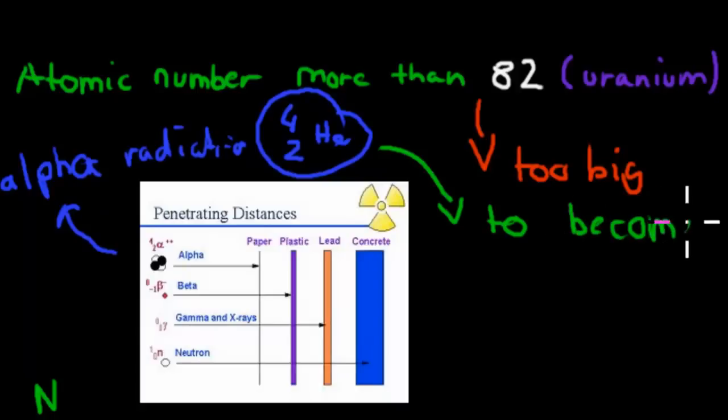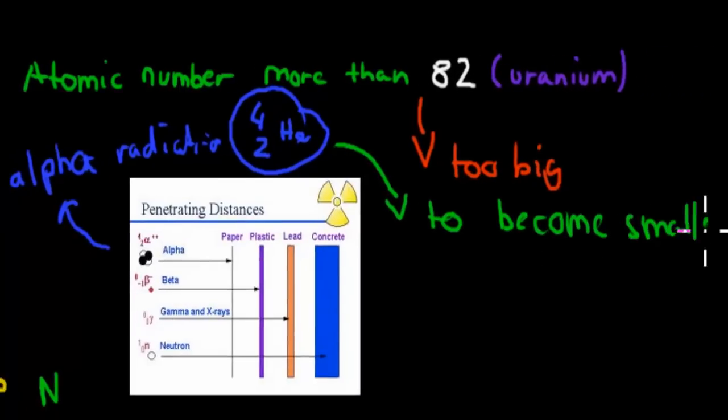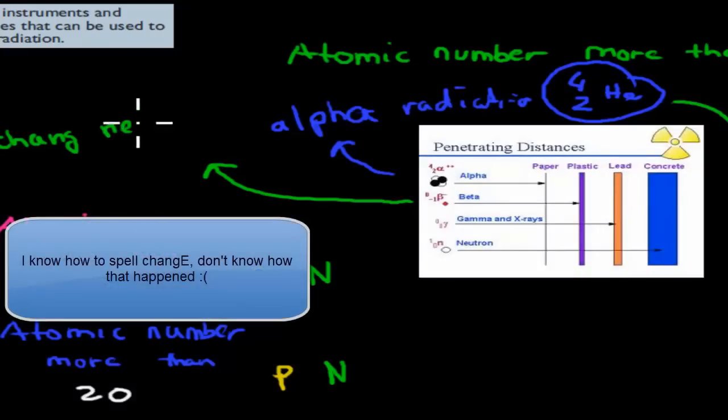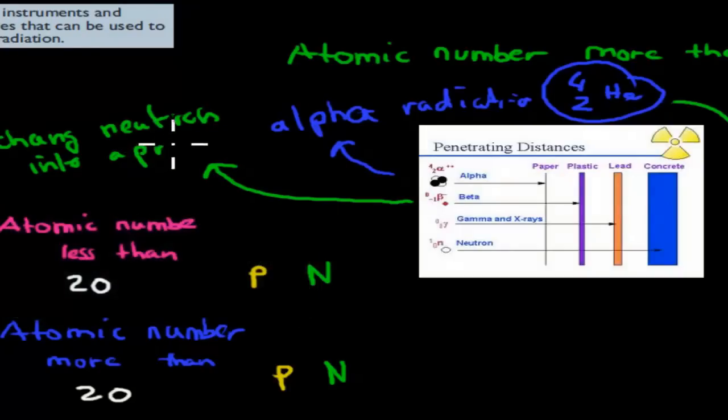We also said we have beta radiation, and beta radiation was a bit different. In beta radiation, we have a changing neutron into a proton. And the reason why is because sometimes the ratio might not be ideal. We said that the ratio for elements, not for people, but for elements with the atomic number less than 20, the ratio of those should be 1 to 1, which means for elements with the atomic number of less than 20, we should have 1 proton for every 1 neutron.